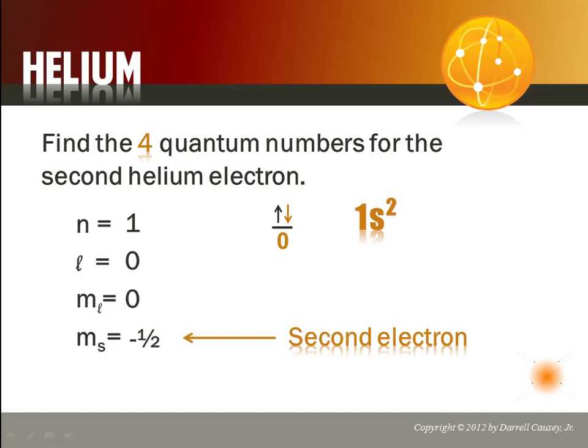Now, you'll notice that the second electron has the same first three quantum numbers as hydrogen, or the first helium electron. But remember, the Pauli exclusion principle says no two electrons can have the same four. And so, notice the spin is different on both of them.